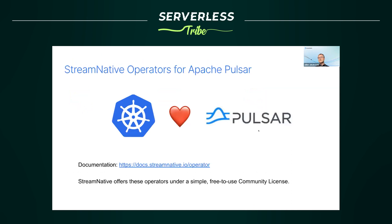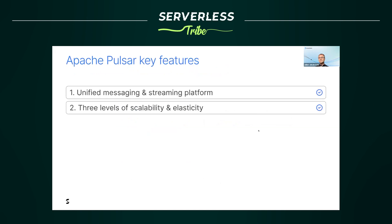To ease Pulsar deployment in Kubernetes environments, StreamNative developed Kubernetes operators. These operators facilitate deployment of Pulsar clusters on Kubernetes — you define your desired cluster configuration using familiar Kubernetes manifest files, enabling seamless scaling and installation of additional components. You can find the documentation on the StreamNative website, and StreamNative offers these operators under a simple, free-to-use community license. That was the second feature of Pulsar — its multi-layered architecture. Now let's talk about the third feature: durability.